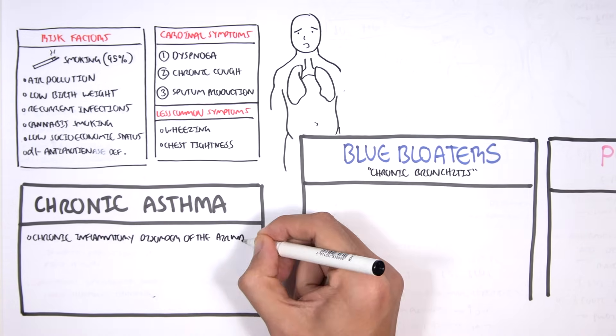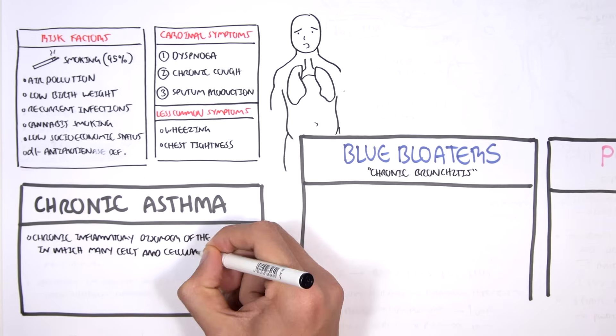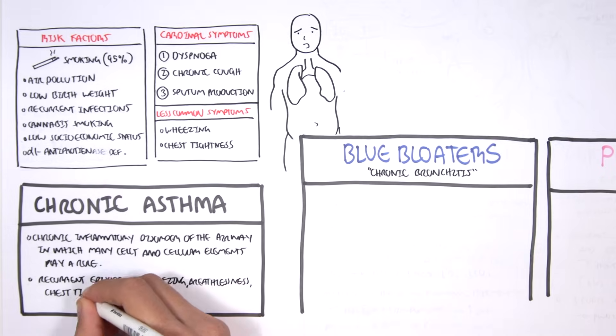Asthma is a chronic inflammatory disorder of the airway in which many cells and cellular elements play a role. Recurrent episodes of wheezing, breathlessness, chest tightness, and coughing are only some signs and symptoms of asthma.